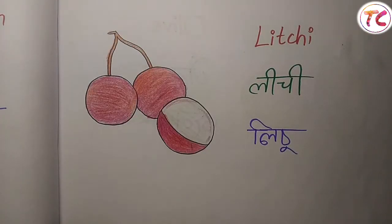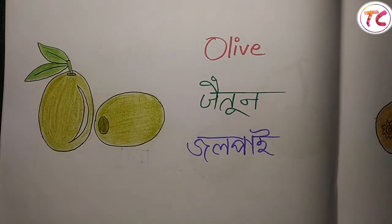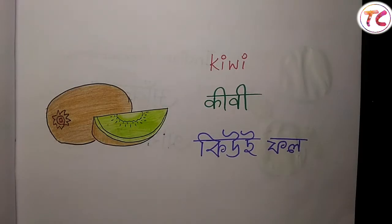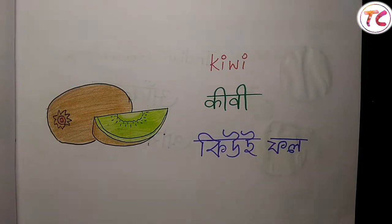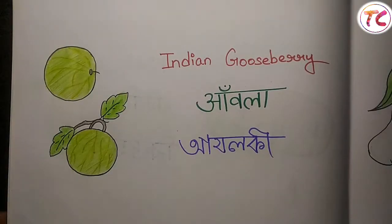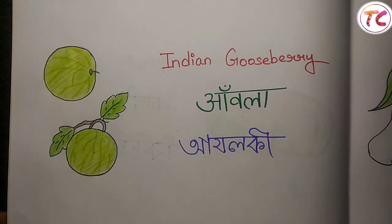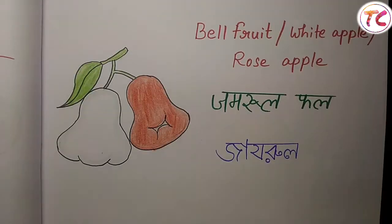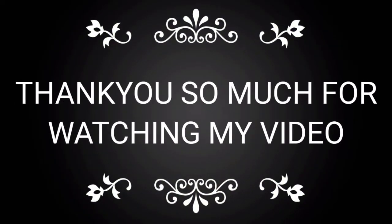Lychee — leechi — লিচু. Olive — jetun — জলপাই. Kiwi — kiwi — কিউই. Indian gooseberry — awla — আমলকি. Bell fruit / rose apple — jamrul — জামরুল.